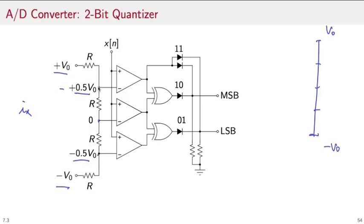These reference voltages are used with a bank of comparators, so operational amplifiers in open loop, to determine which quantization interval the current sample value belongs to. Let's work out an example with an input voltage of 0.2 V0. The first comparator will have 0.2 volts at the non-inverting input with a reference of 0.5 volts. So the reference is higher, so here the output will be a negative voltage.